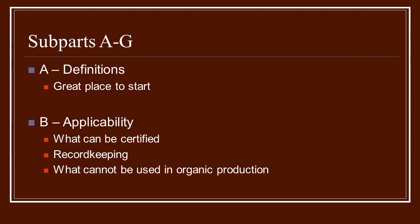Subpart B covers applicability — what can be certified, what type of record-keeping needs to be done, and importantly, what cannot be used in organic production. It's very important to know what is okay, but even more important to know what is not okay, because once a prohibited substance is put in your field, it takes three years before you can be certified organic. So it is very important to know what is not okay.